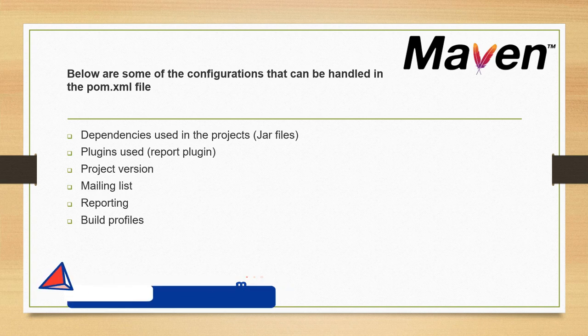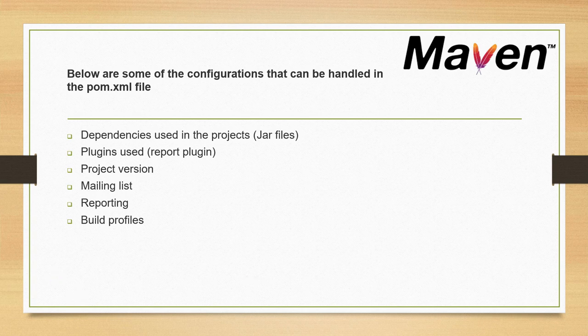We can also configure a mailing list. So if anybody tries to build your project, you can have a configured email address and an email can be triggered to those developers. Then we have a reporting section — to generate any kind of report like test case or integration test reports, you can configure the report section as well.